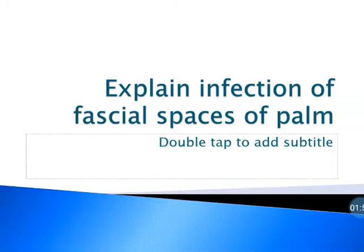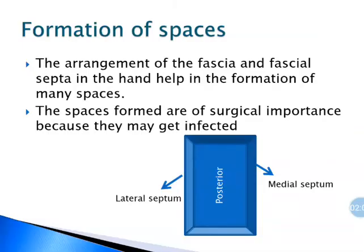Now we explain why infection occurs in fascial spaces of the palm. First we discuss the formation of spaces. In the hand there is an arrangement of fascia and septa arising from the palmar aponeurosis, and how they help in the formation of spaces. These spaces are of surgical importance because they may get infected.